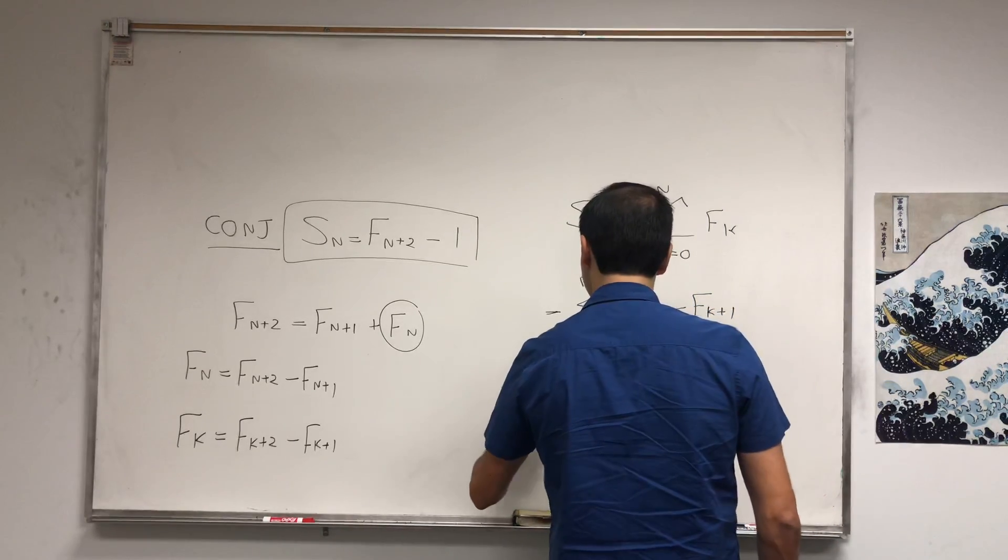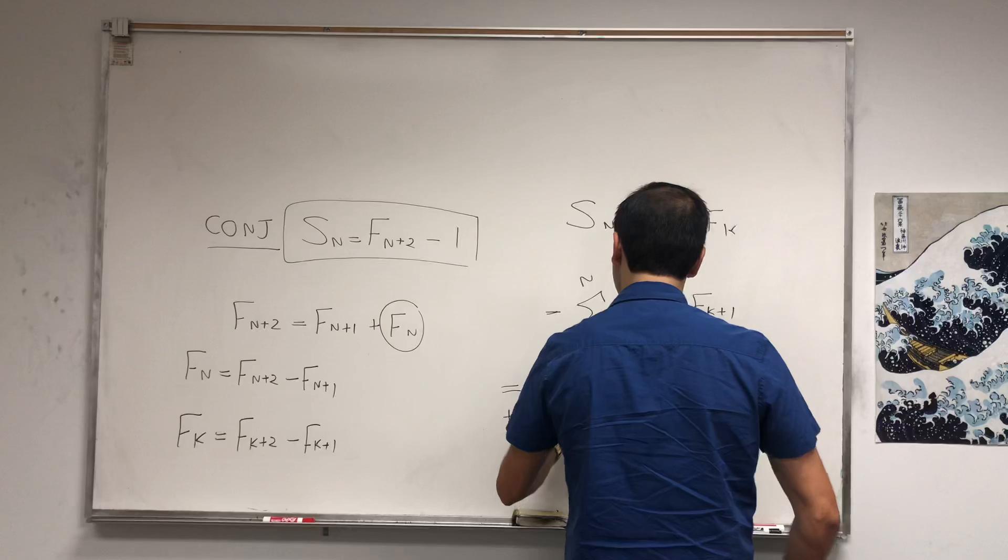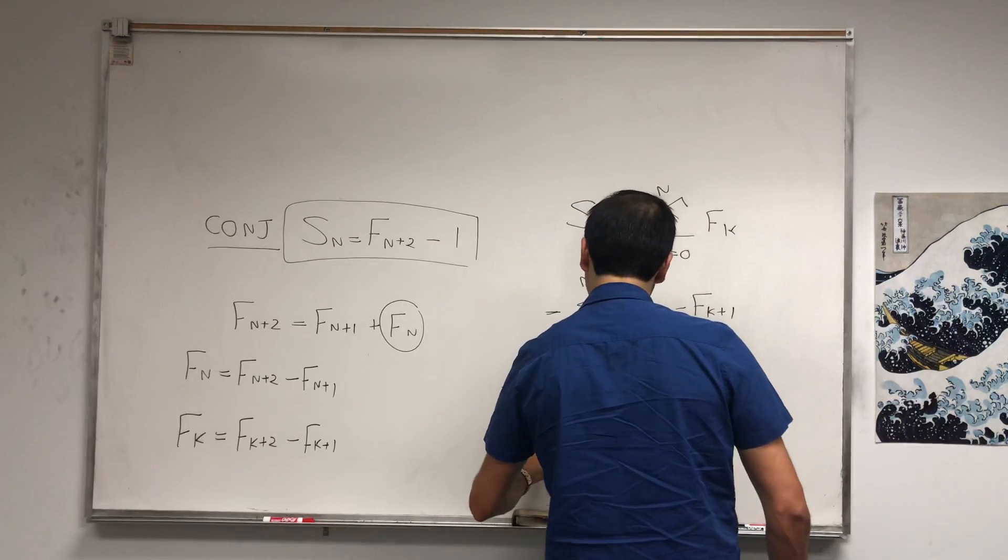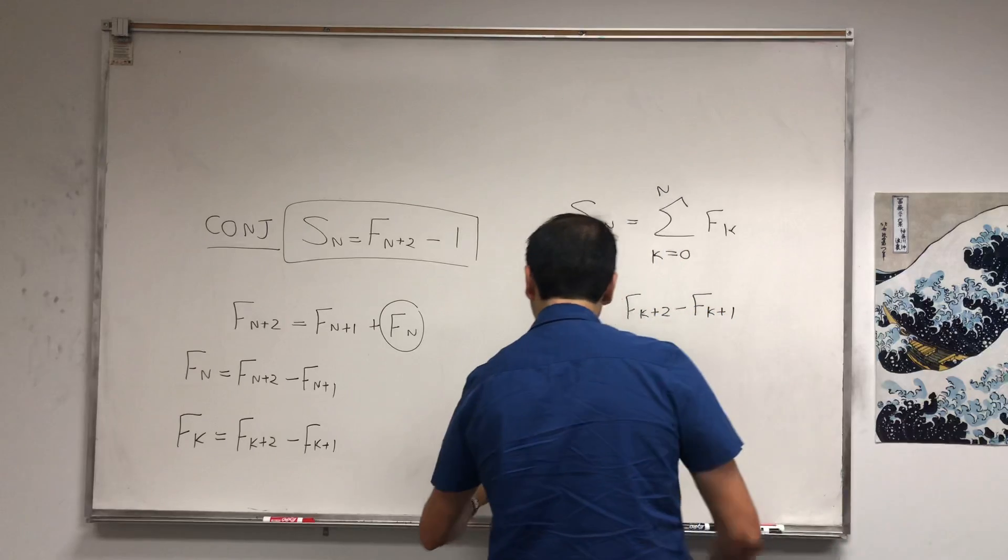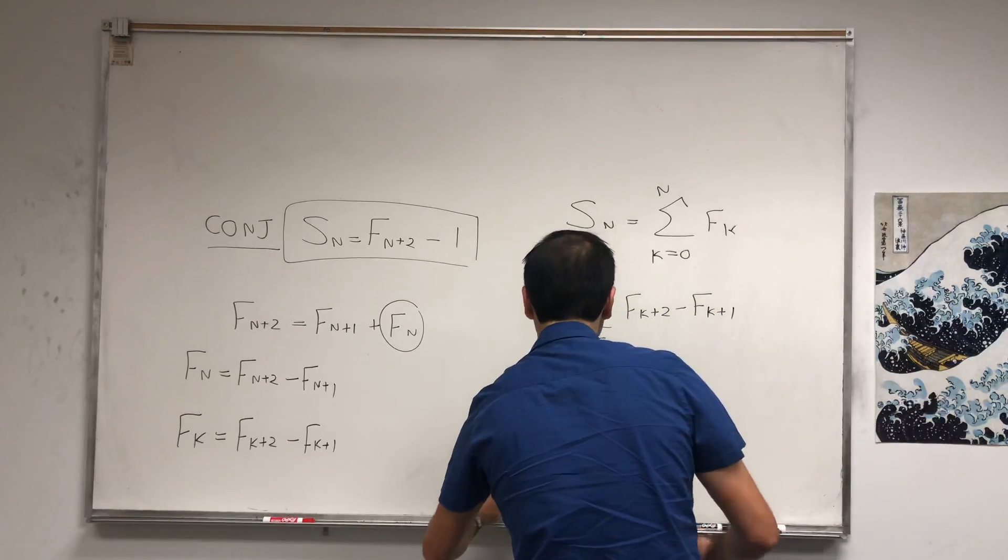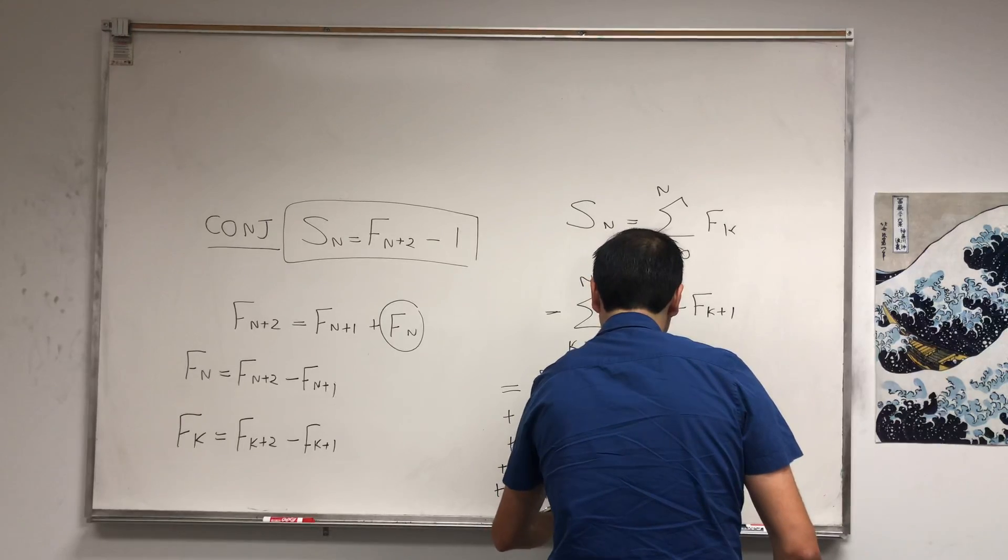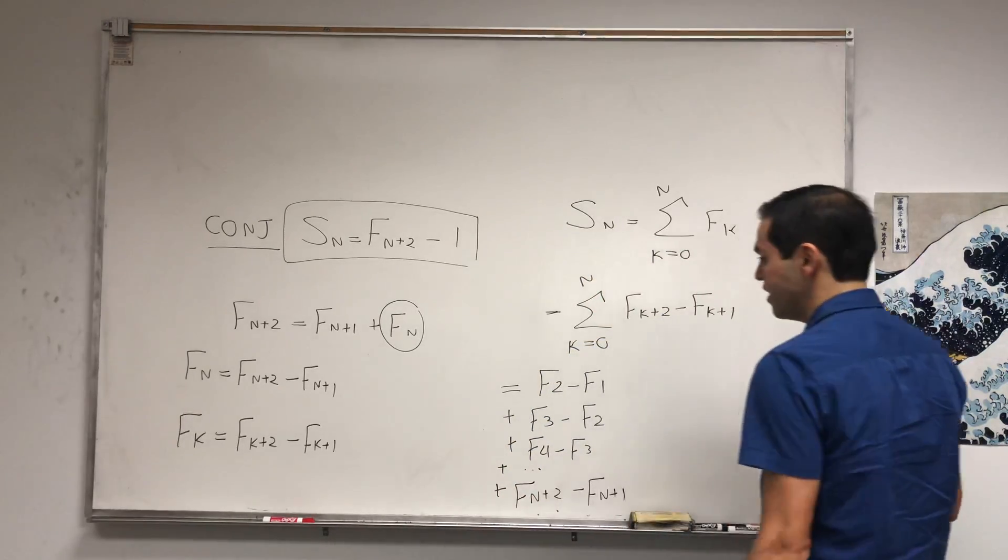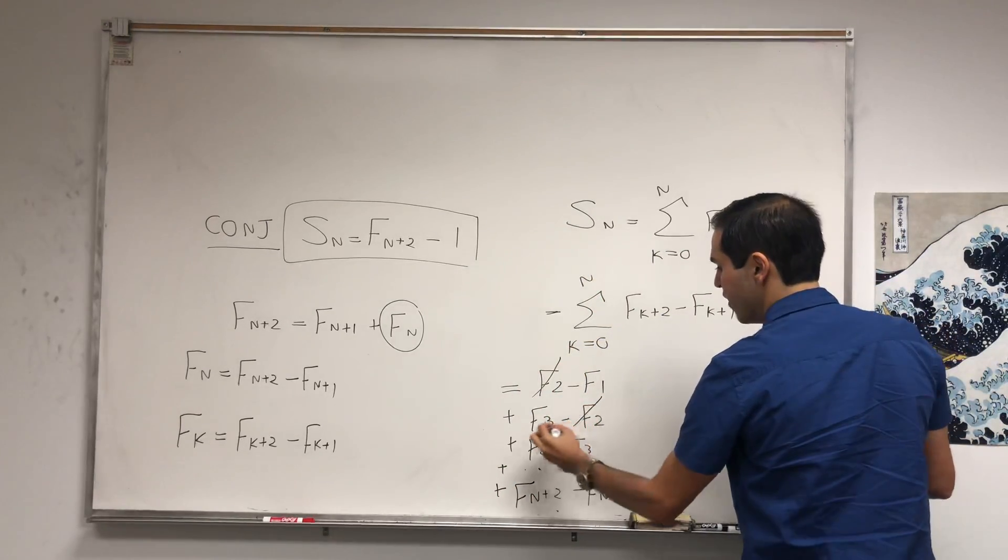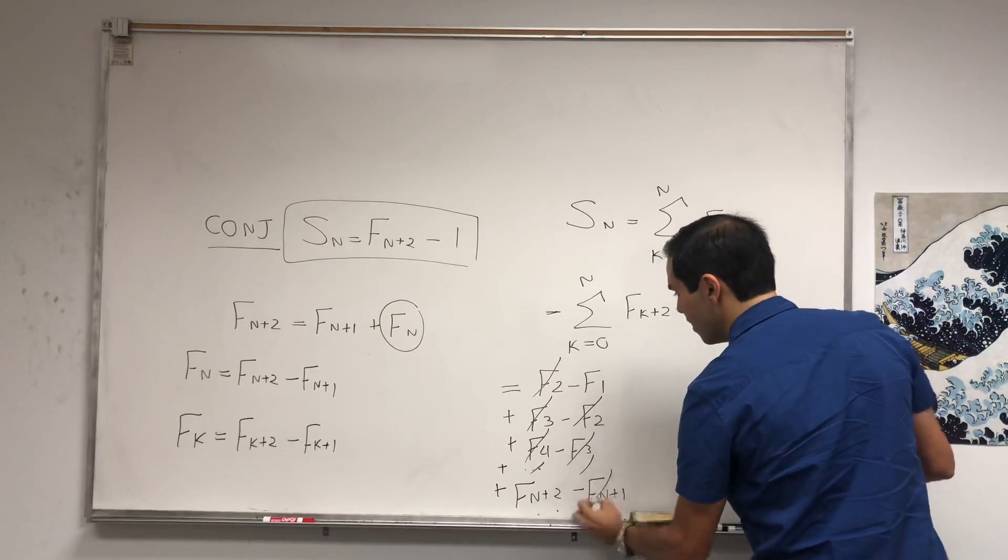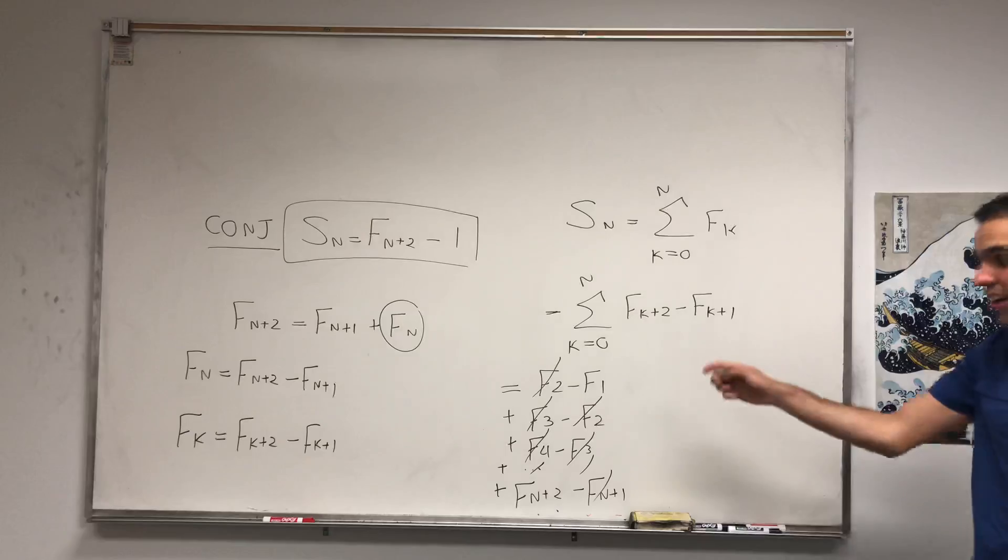Plus F3 minus F2, plus F4 minus F3, all the way up to Fn+2 minus Fn+1. And let's see: well, F2 cancels out, F3 cancels out, F4 cancels out—everything cancels out except F1 and Fn+2.